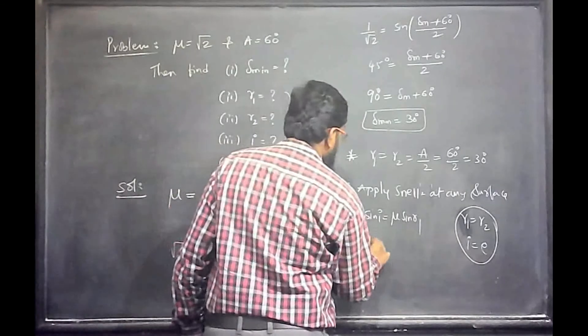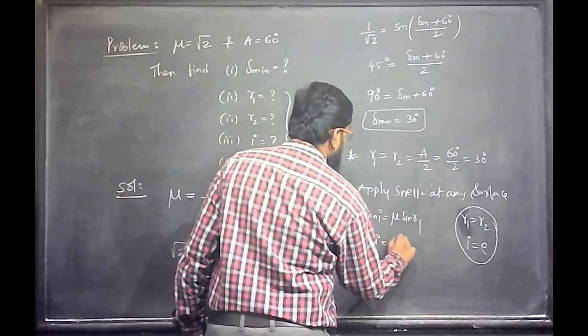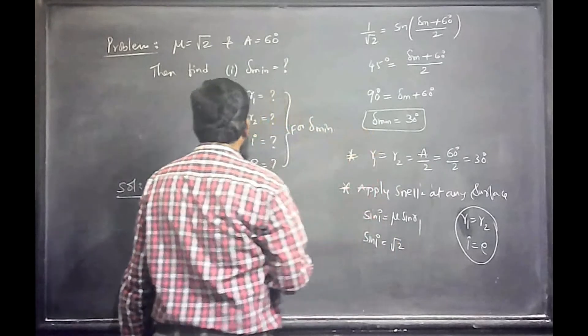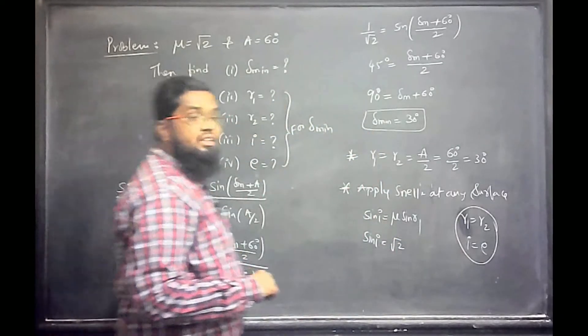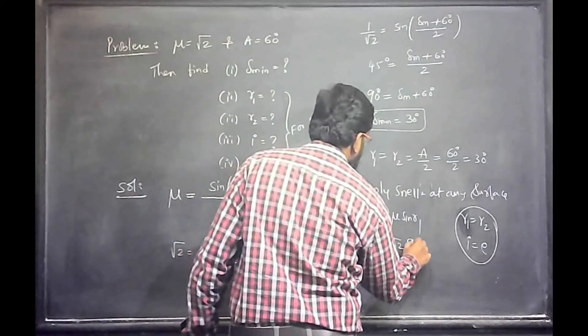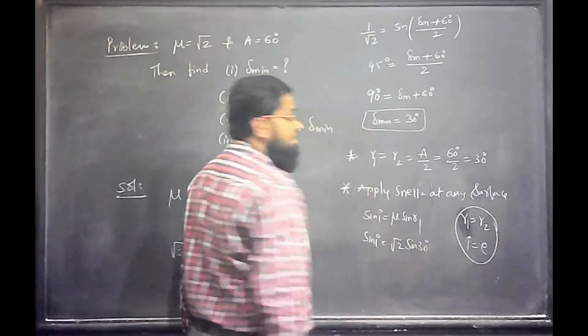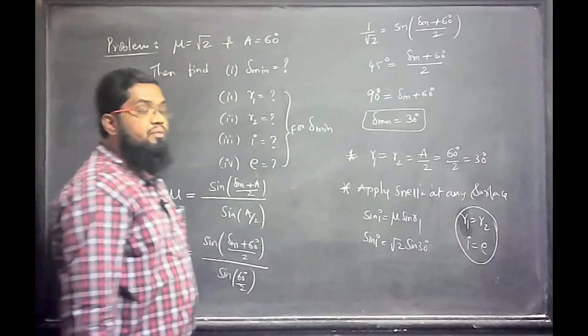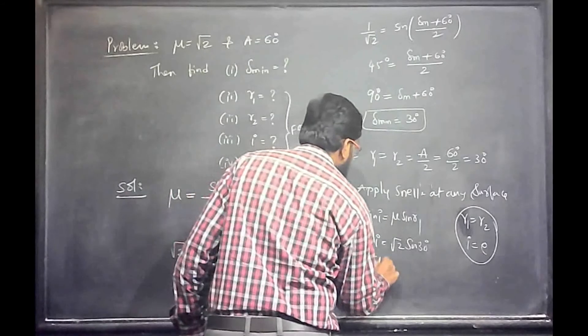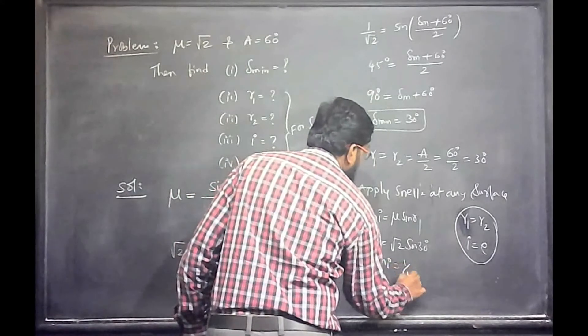Sin I, μ is √2. Sin R1, R1 is 30 degrees. That is sin 30 degrees. What is sin 30 degrees? 1 by 2. That is 1 by √2. So sin I will be 1 by √2.